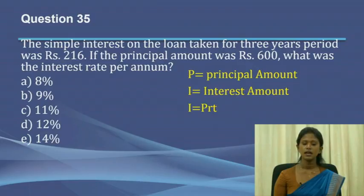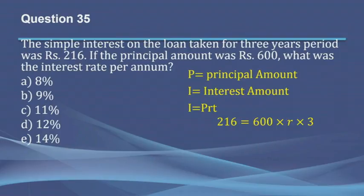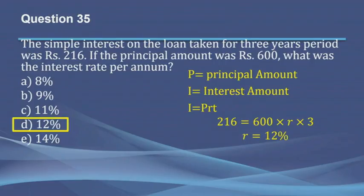The standard formula for simple interest is I equals P times R times T. R is the interest rate per annum, which is what we need to find. The interest amount I is given as 216 rupees, the principal P is 600 rupees, and the time period T is 3 years. Solving for R gives us 12%. So the answer is C.